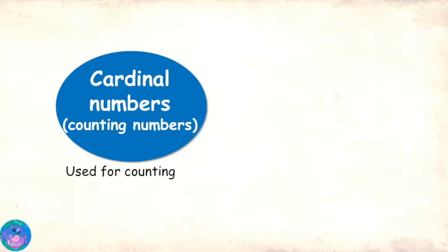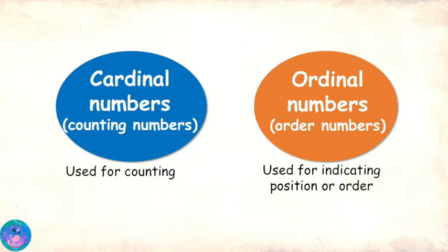The numbers first, second, third, fourth and so on are used to tell the order number or position and are called ordinal numbers or position numbers or order numbers.